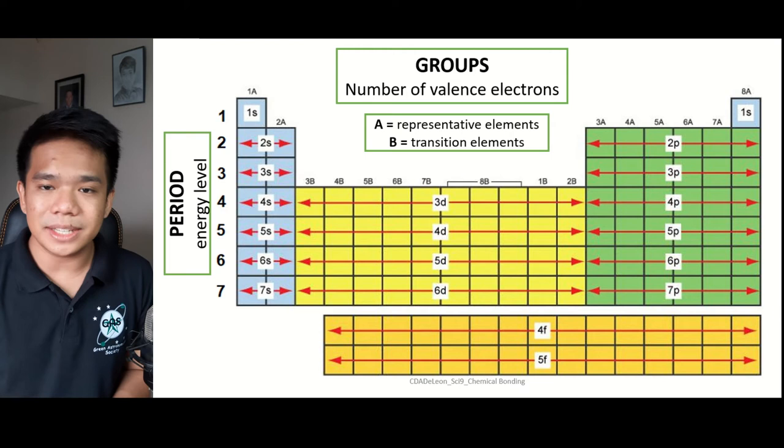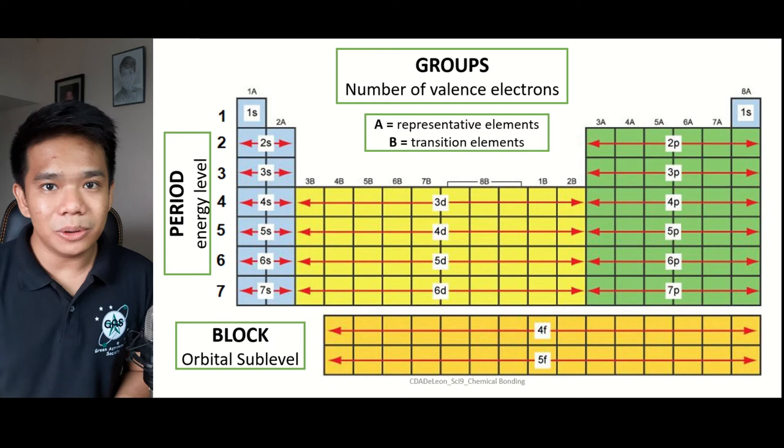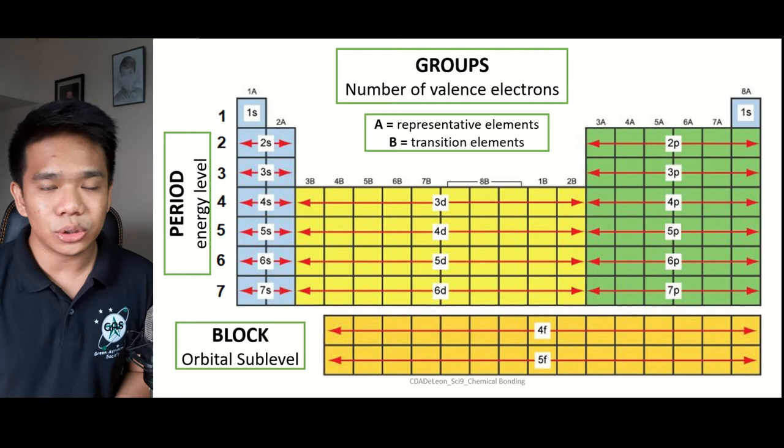Lastly, the elements in the periodic table are also divided into blocks, wherein this refers to the orbital sublevels of their electron configuration. The blocks refer to the highest orbital level in an element's electron configuration.